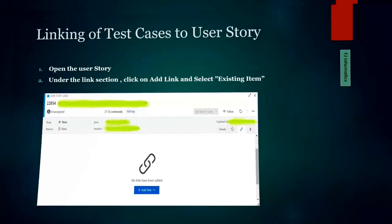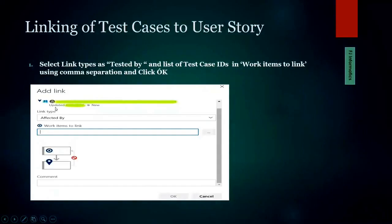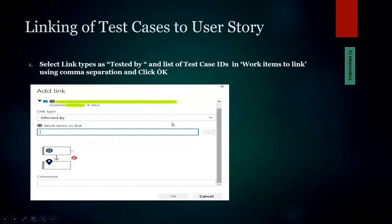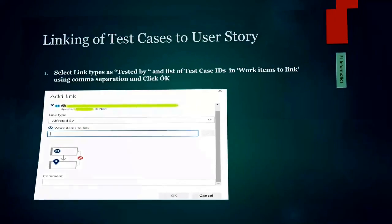This scenario applies when you already have user stories written and test cases already written, and you want to relate them. Once you click 'Add Existing,' a window appears where you select work items to link. Provide the test case ID — for example, 1234 — and click OK. That is how you create a link between test cases and user stories.